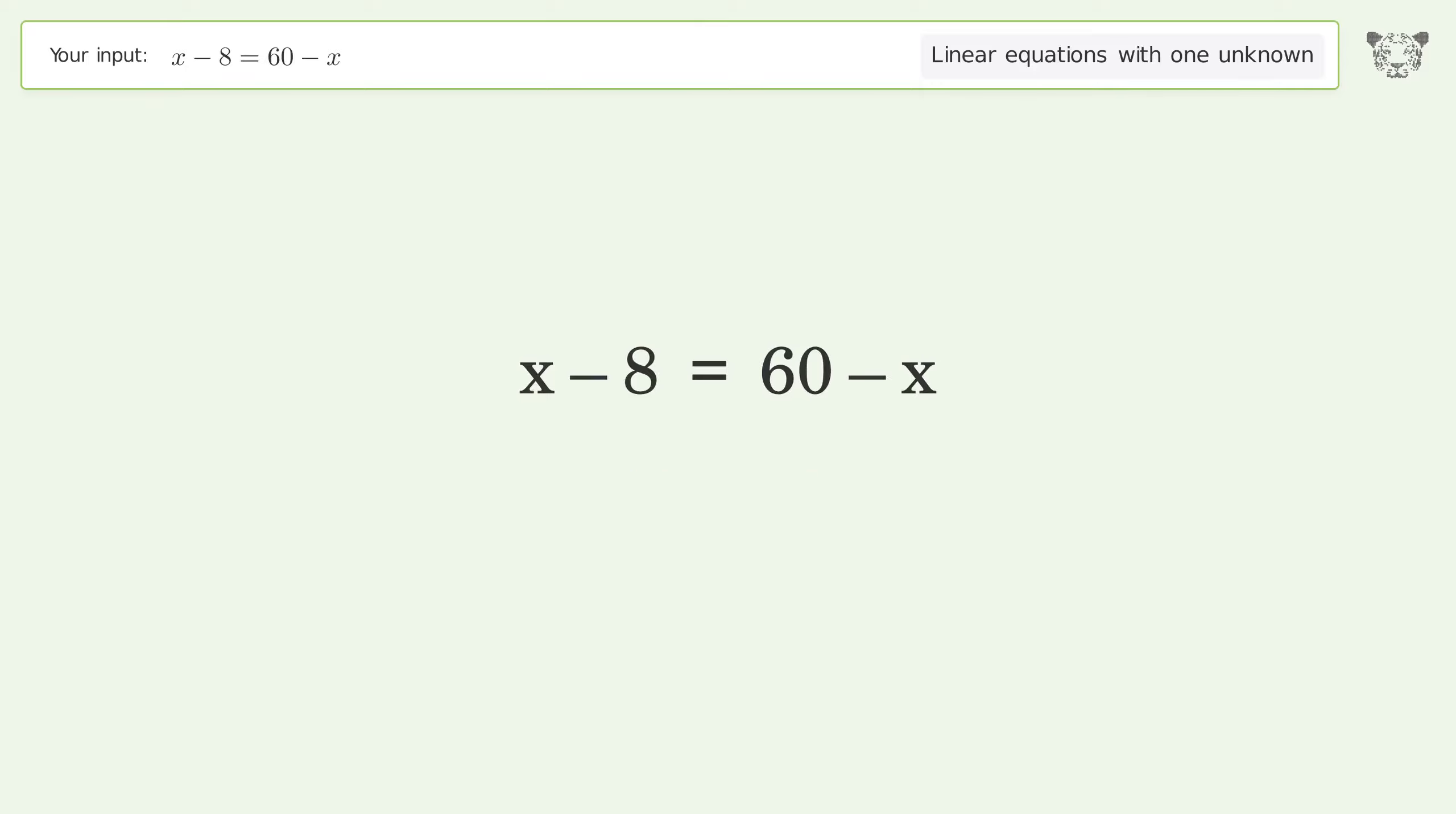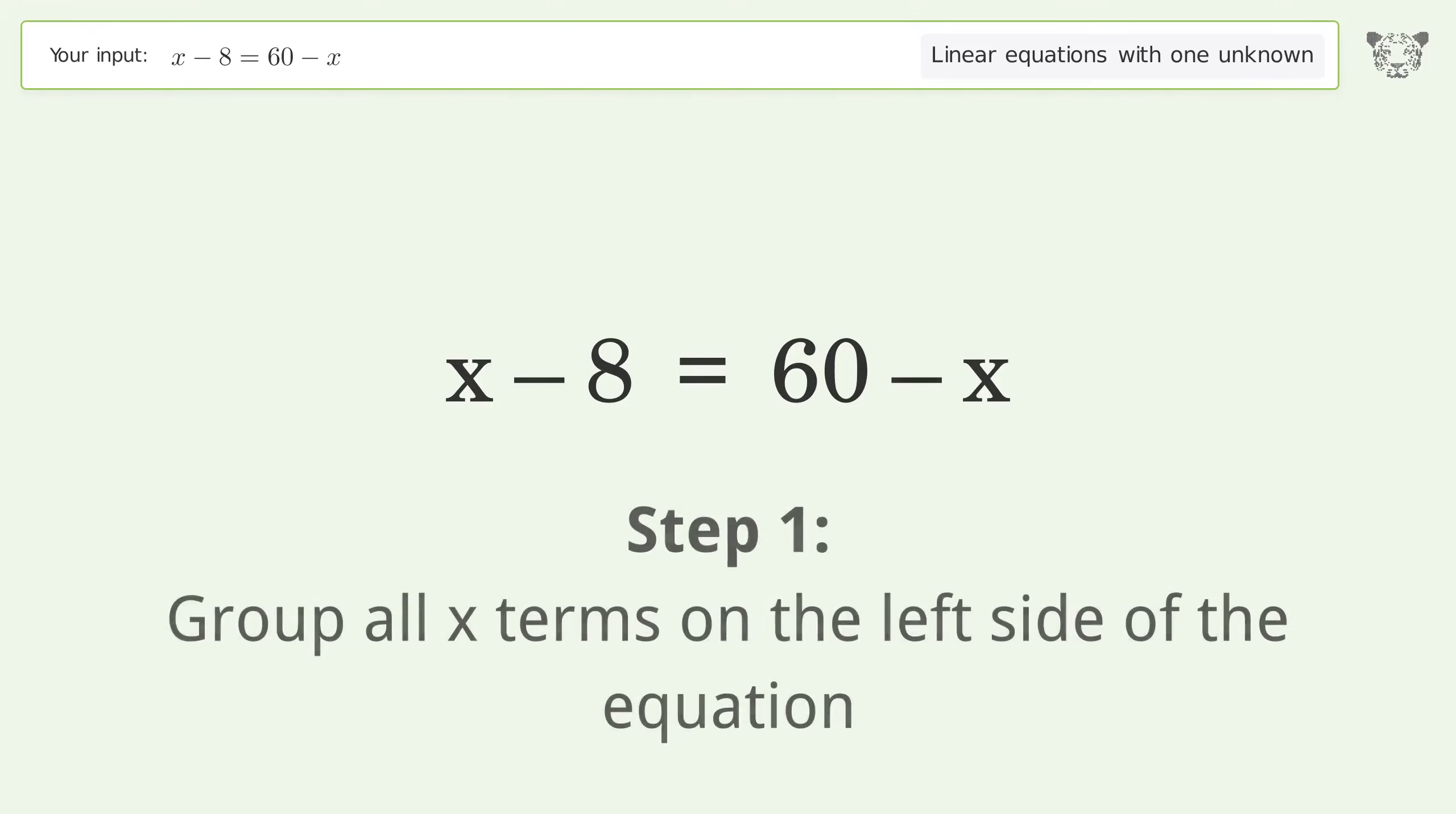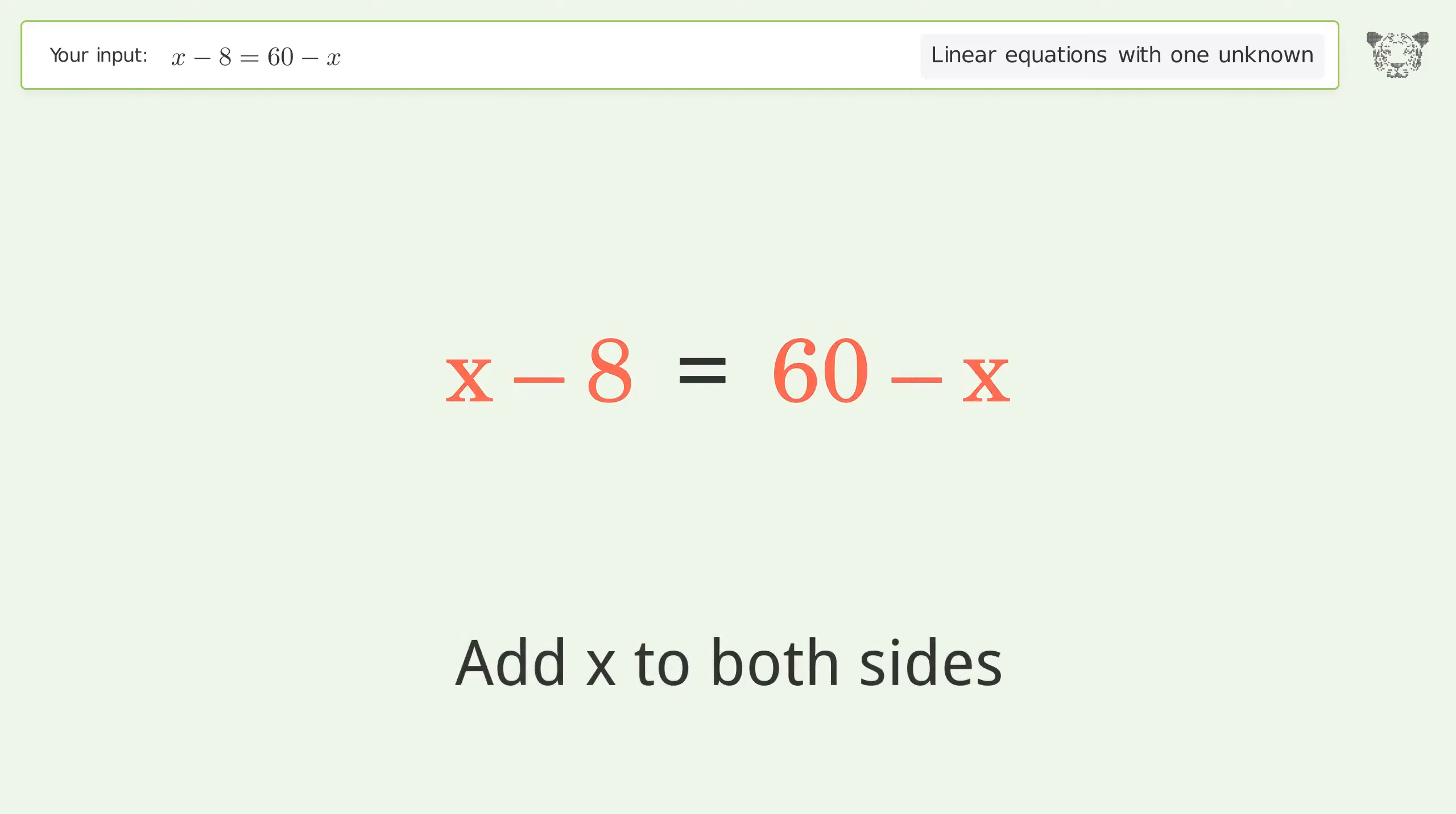Let's solve it step by step. Group all x terms on the left side of the equation. Add x to both sides. Group like terms.